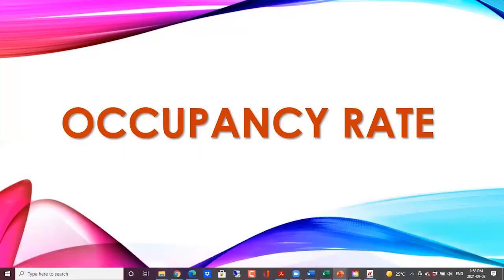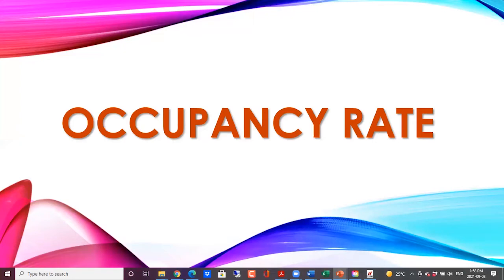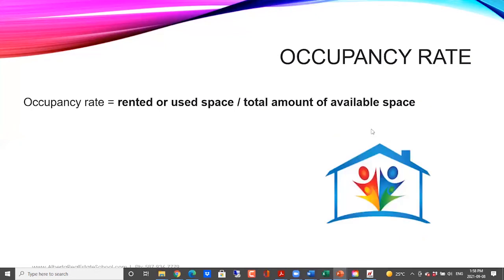Now let's take a look at occupancy rate. Occupancy is basically the opposite of vacancy. Occupancy is all the units that are actually rented out — it's the percentage of rented or used space in a rental property. The formula is total rented space divided by total space that is available.